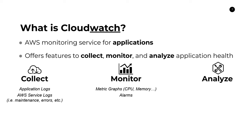Alarms allow you to become notified whenever something out of the ordinary happens in your application for a prolonged period of time. So say, for instance, if we have an elevated CPU usage — maybe above 90% for 15 minutes or so — that usually indicates that there's something wrong with our application. So we may want to set up an alarm that triggers a notification that sends us an email or a text message, or even pages us, to let us know that something is going wrong with our application.